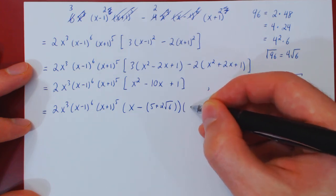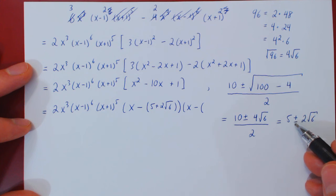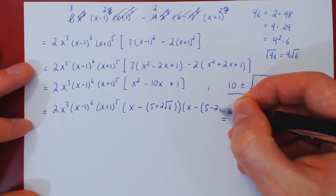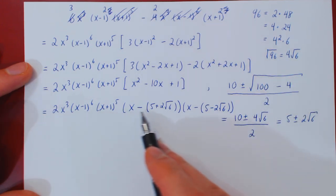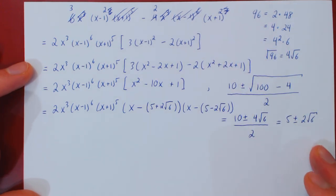The second factor, of course, is x minus the second zero, the second root. Taking now the negative sign, so 5 minus 2 root of 6. And now we have a complete factorization of the initial difference of terms. And that's it.